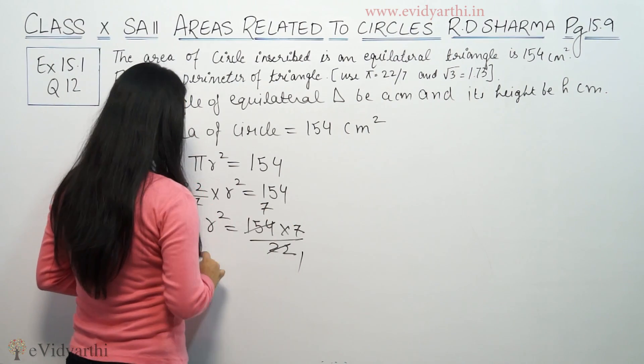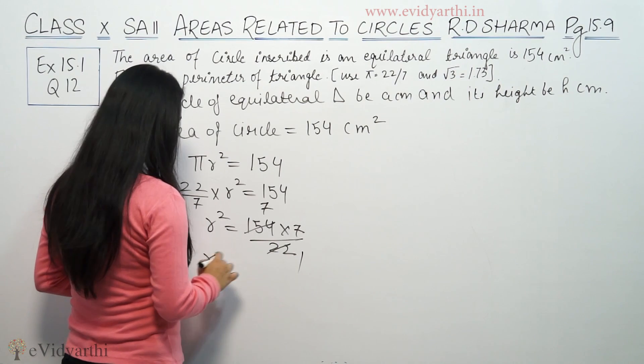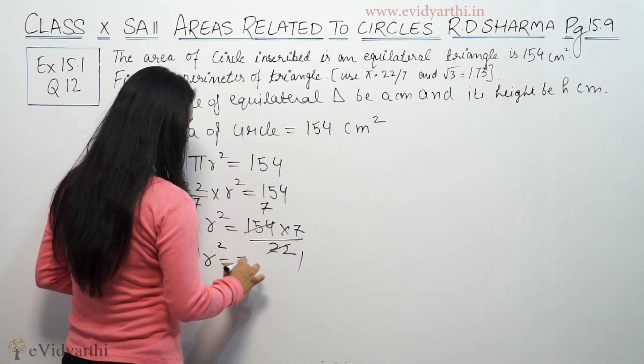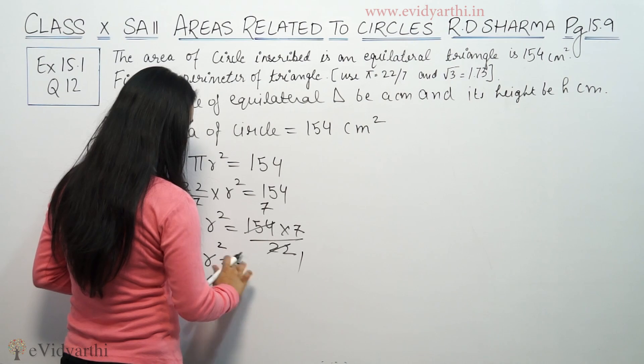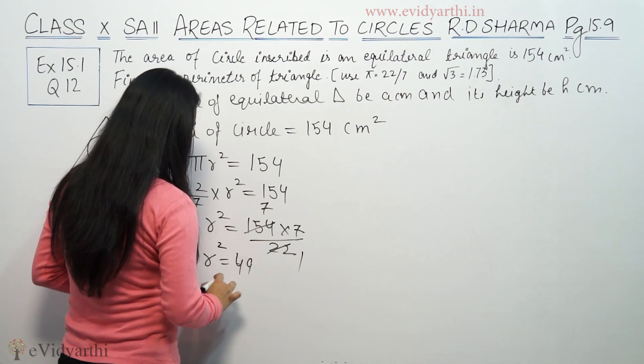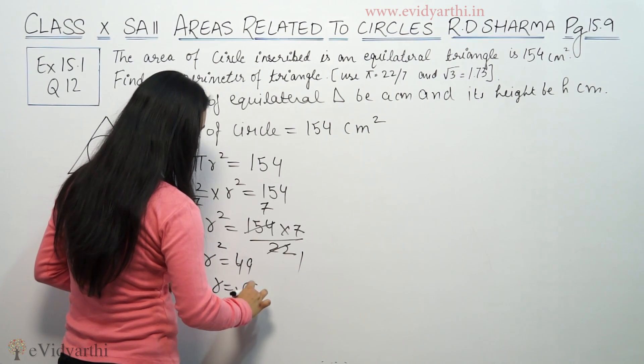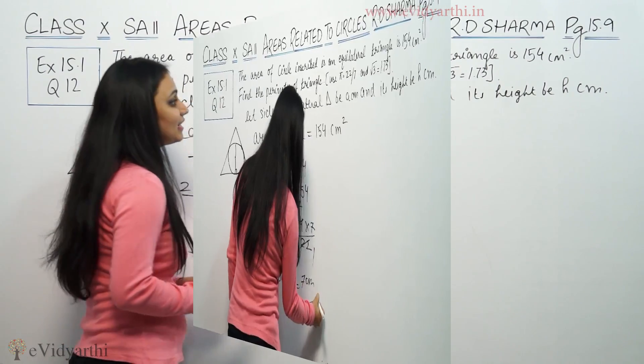22 into 7 is 154, so r² equals 49. Therefore, r is the square root of 49, which means 7 centimeters is the radius.